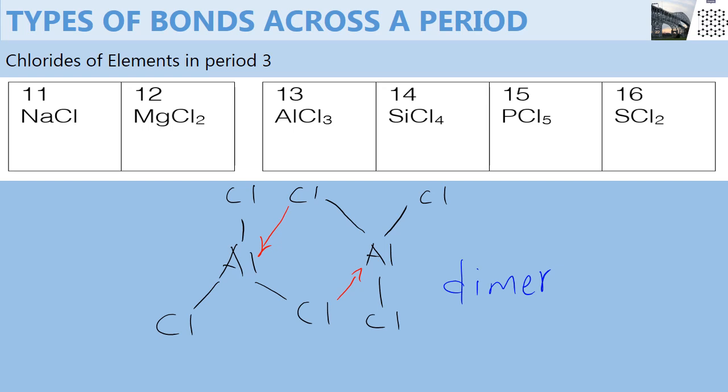So aluminium chloride, which would have been written as AlCl₃, is usually written as Al₂Cl₆, because two molecules of aluminium chloride combine to form a dimer of aluminium chloride.